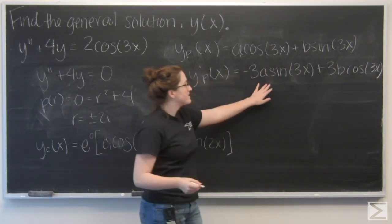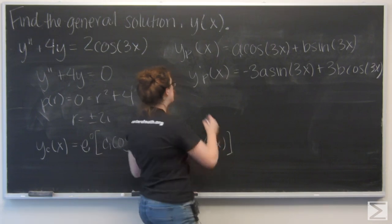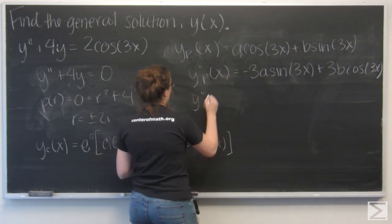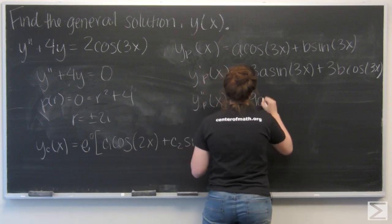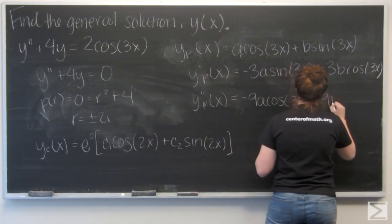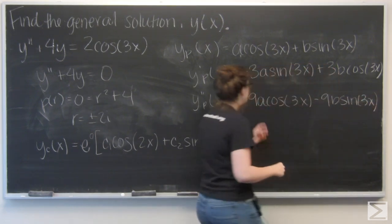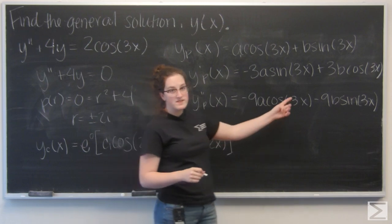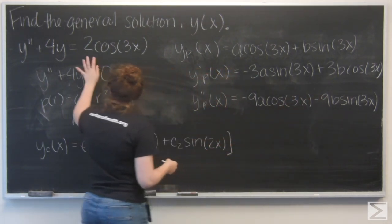Which is negative 3a sine of 3x plus 3b cosine 3x. Now let's find the second derivative. Which is negative 9a cosine 3x minus 9b sine 3x. Now I want to plug this into the equation.